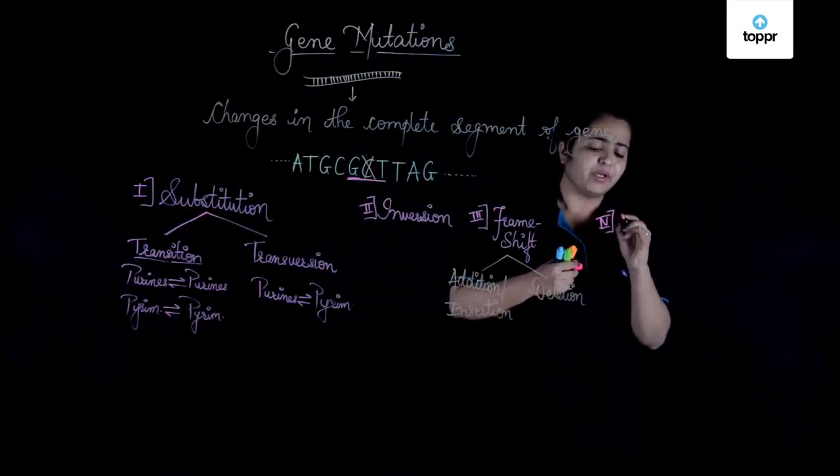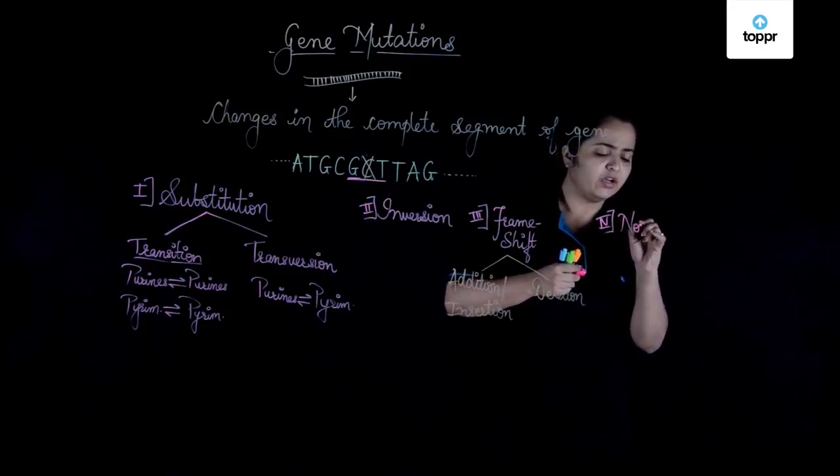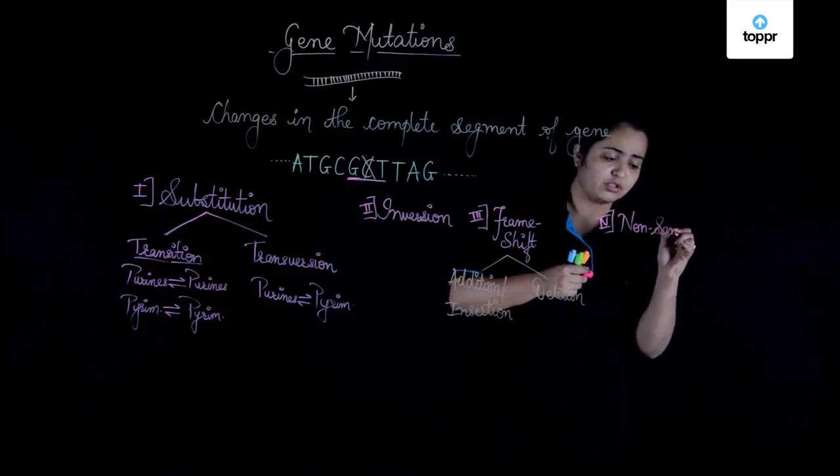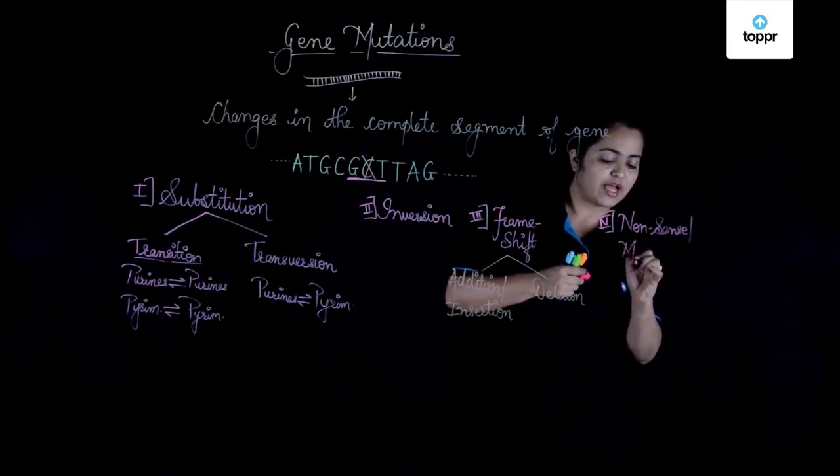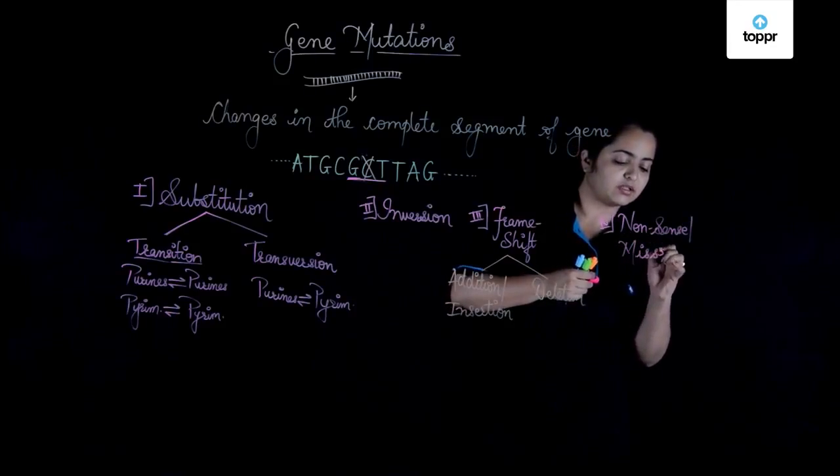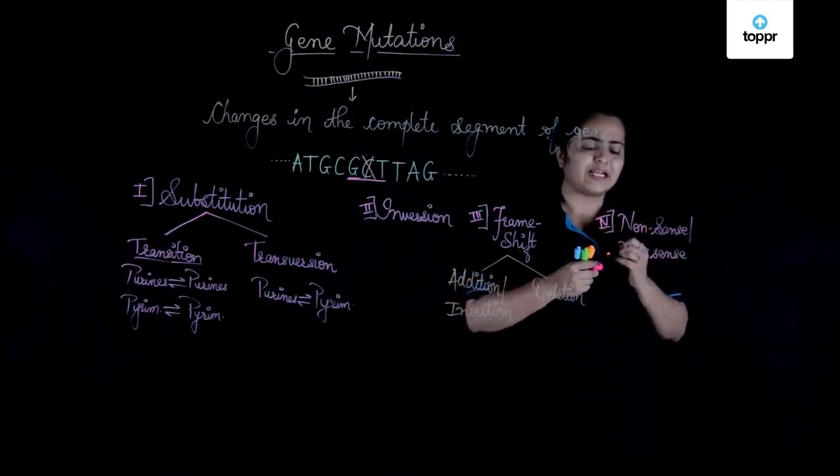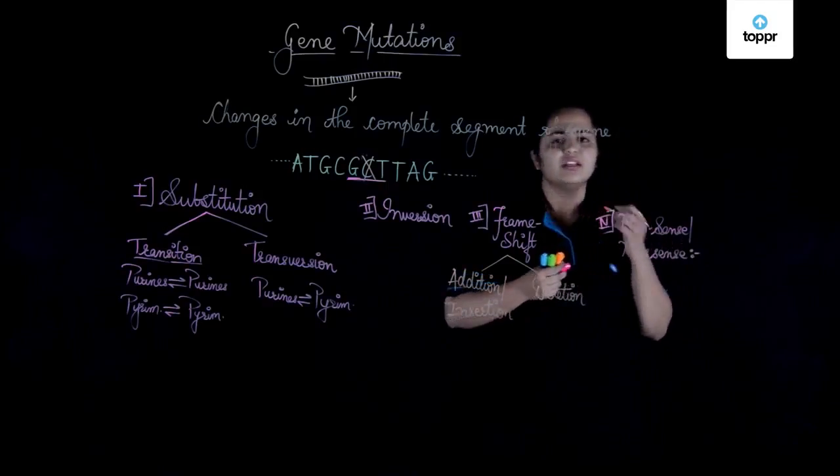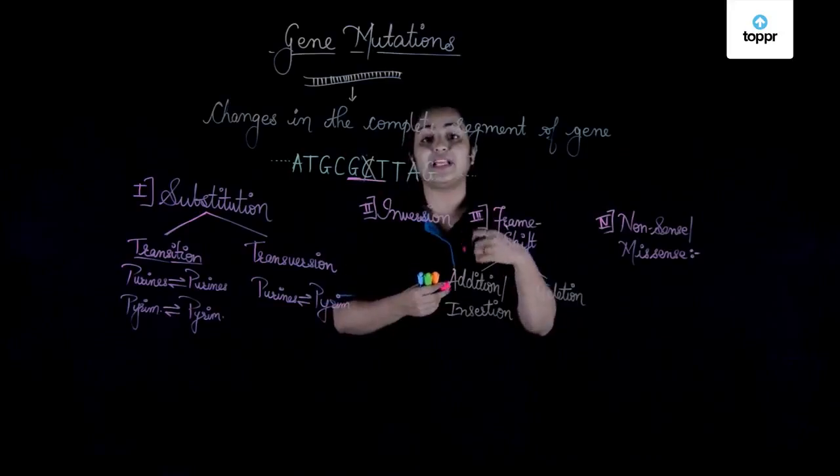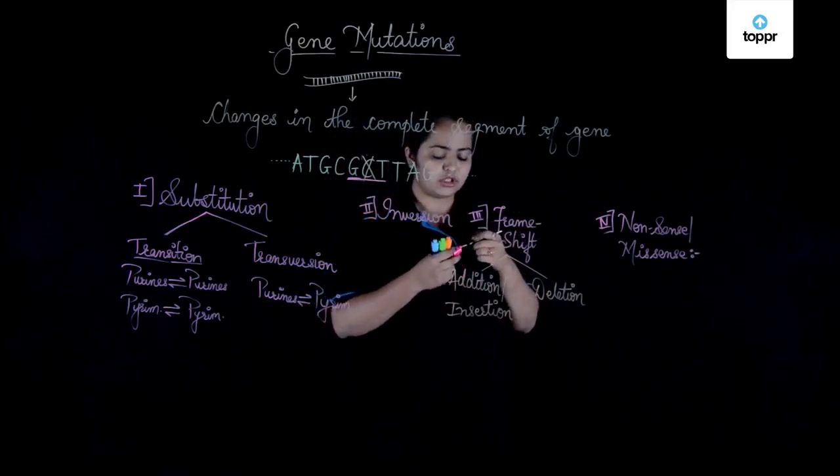Fourth type is very simple in which we either have nonsense mutations. I know it's funny, or we can also have missense mutations. That means what? That means certain changes. Sometimes it can happen. There are certain stop codons also.